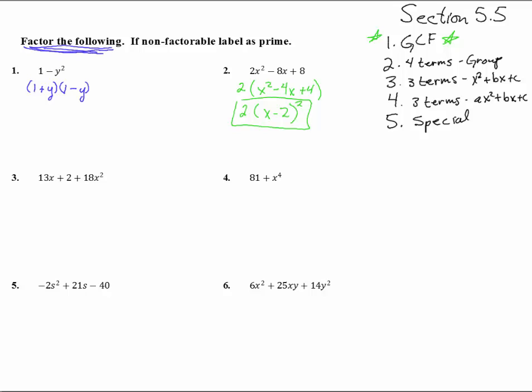The next one, number three. I don't like how this looks, I'm going to move it around a little bit: 18x² + 13x + 2, right in descending order so we can tell what's going on. Is there a greatest common factor? There isn't. That 13 is prime, so we're not going to pull anything out of there. So we now look: how many terms are there? Three of them. Three terms: ax² + bx + c.